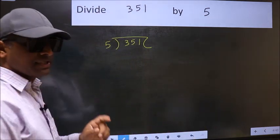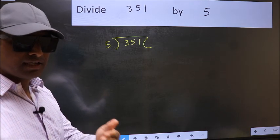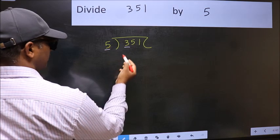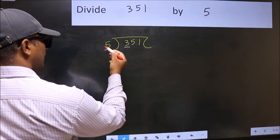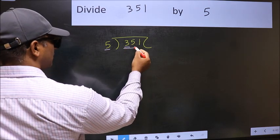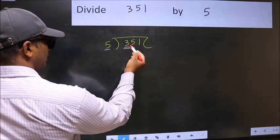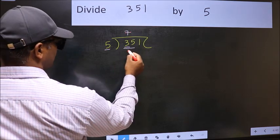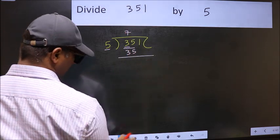Next, here we have 3 and here 5. 3 is smaller than 5, so what we should do is take two numbers: 35. When do we get 35 in the 5 table? 5 times 7 is 35. Now you should subtract 35 minus 35 equals 0. After this, bring down the beside number, so 1 down.